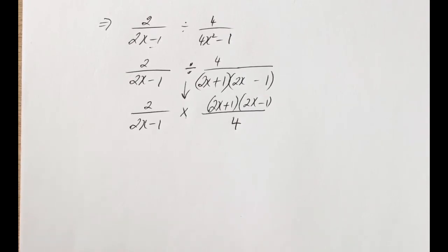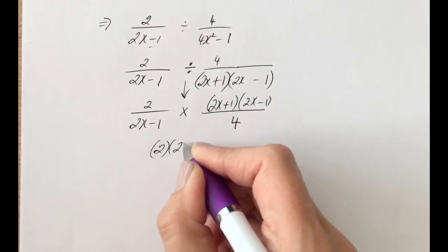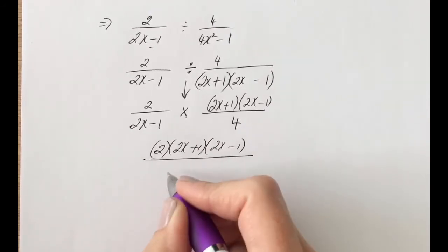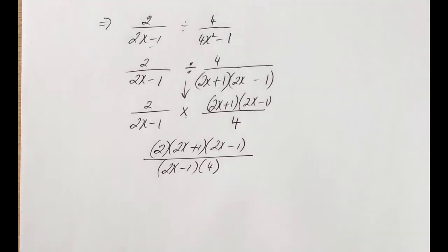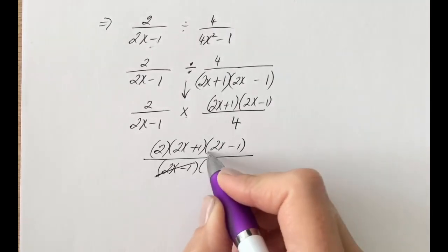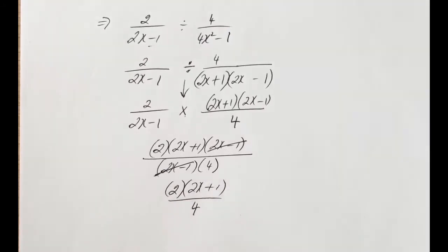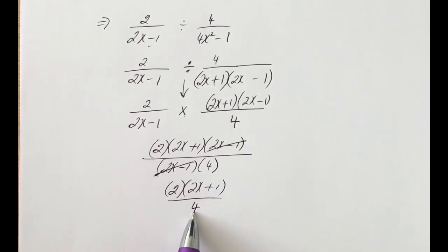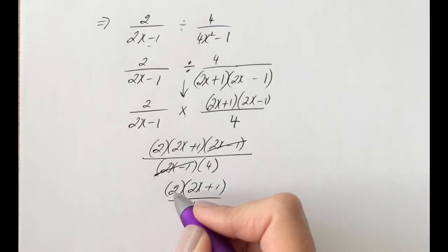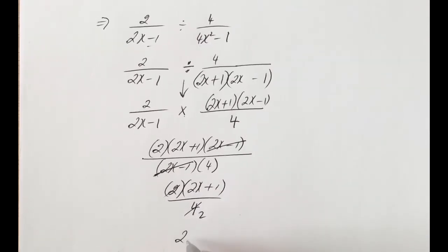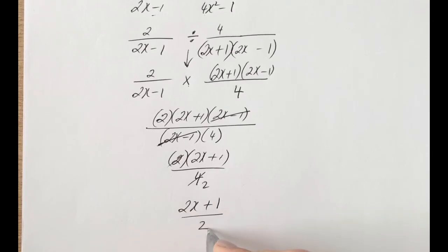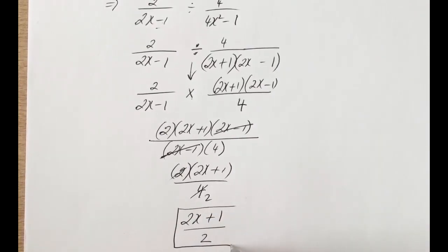We keep everything in factorized form and multiply along the top and bottom. The top gives 2 times (2x plus 1) times (2x minus 1), and the bottom gives (2x minus 1) times 4. We can now clearly see that (2x minus 1) cancels from top and bottom, leaving 2(2x plus 1) over 4. We can simplify 2 over 4 to a half, so the final simplified answer is (2x plus 1) over 2.